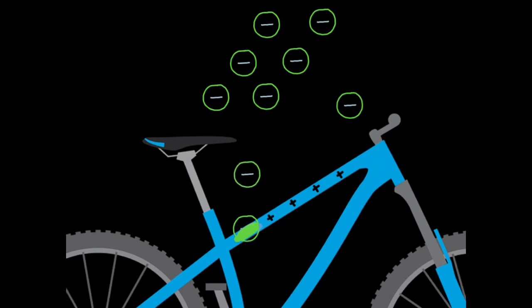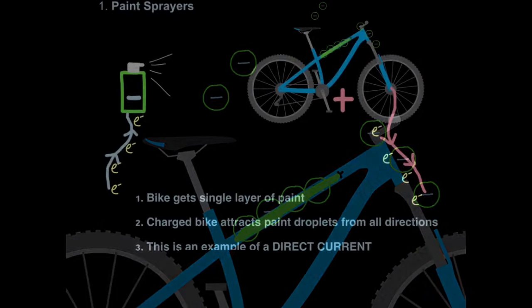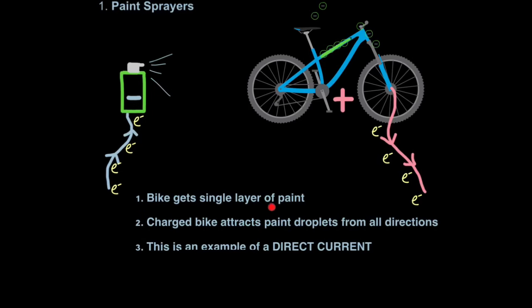In other words, where the paint has landed there's no longer a charged region of the bike. So these other droplets will not be attracted to the same region. Instead, they'll be attracted to the remaining positive regions of the bike. This ensures an even coat of paint is applied. But also it means you can spray from one direction. It can basically act like a homing missile. And from one direction you can even get the back of the bike painted. In other words, the bike frame attracts paint droplets from all directions because of its positive charge.